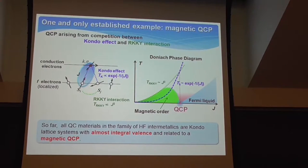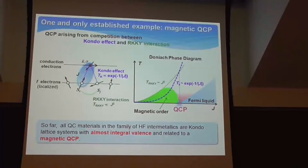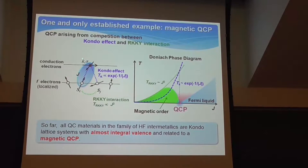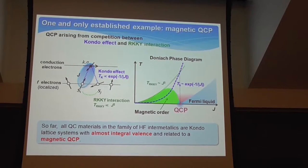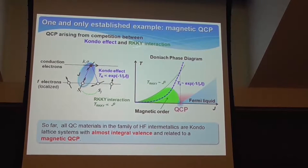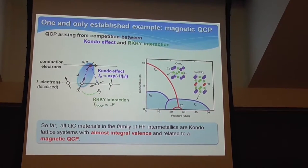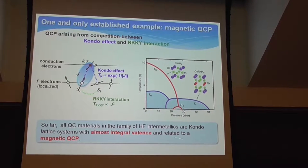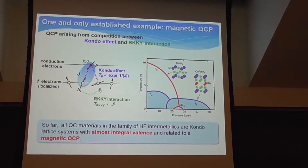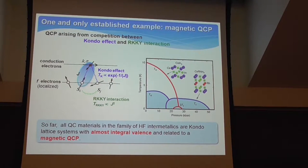The magnetic QCP arises from the competition between the Kondo effect and RKKY interaction. In the Kondo effect, the local F-moment is screened by conduction electrons. In the RKKY interaction, this is the interaction between F-moments through the conduction electrons. These two compete, and this can be schematically understood by the so-called Doniach phase diagram. There are a lot of examples of Doniach-like phase diagrams, and many examples of unconventional quantum criticality and superconductivity found near the magnetic QCP.